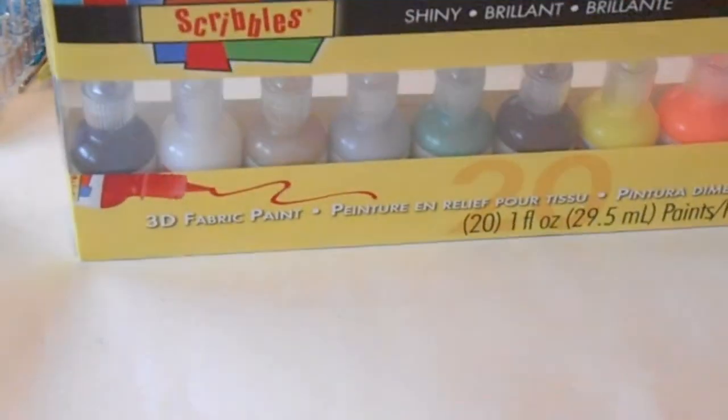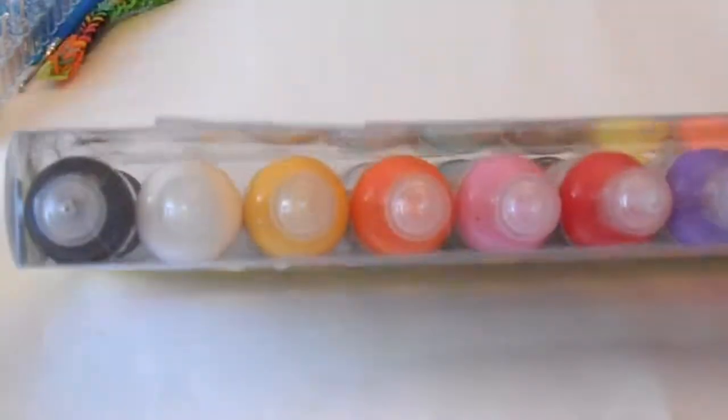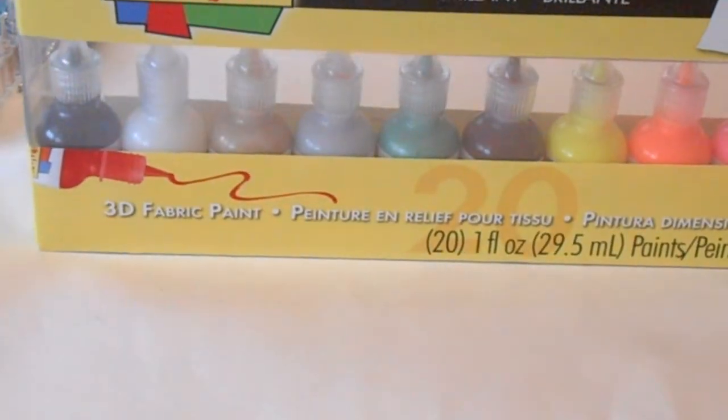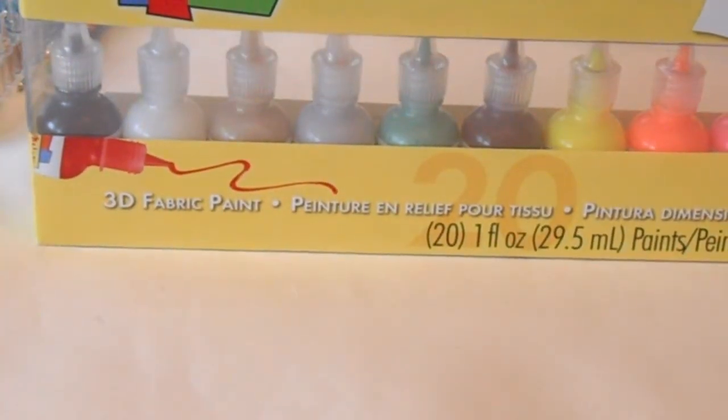So let's get started with the haul. Let me push this aside. The first thing that I got is this 20-pack of Scribbles because I basically love Scribbles fabric paint and you're gonna find out why for a video I'm gonna make tomorrow. And I also got a Tulip mini tie-dye kit, it's pretty cool.